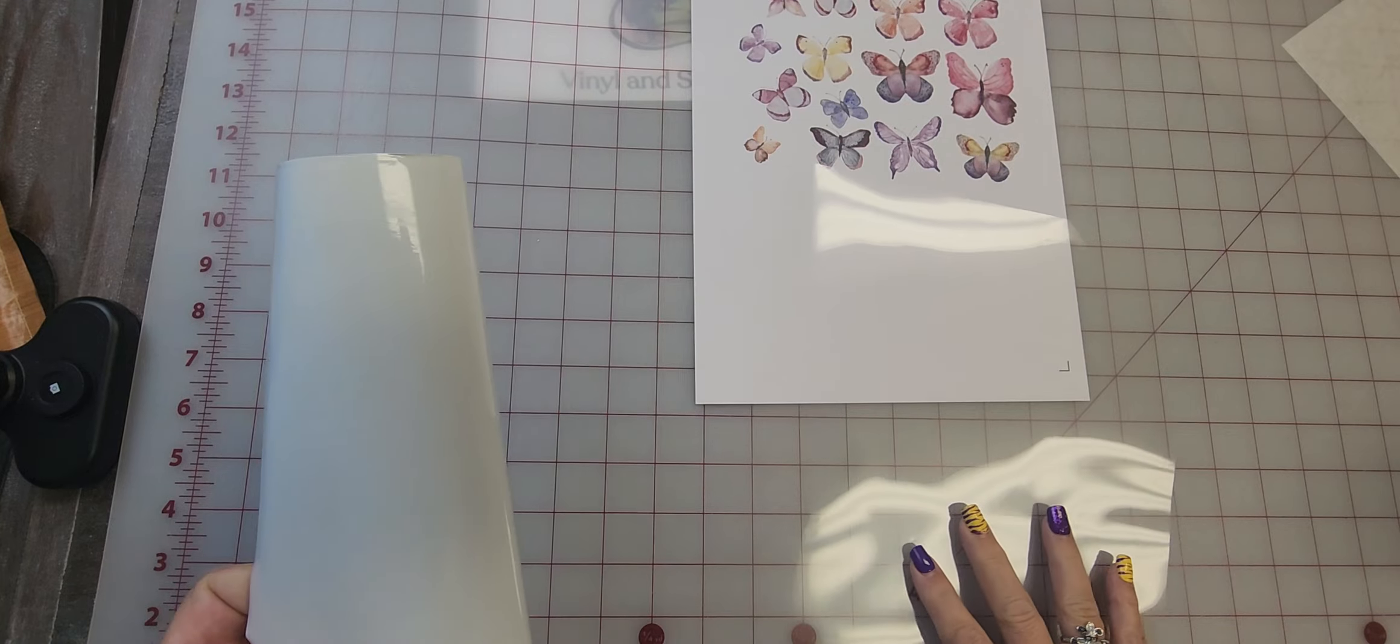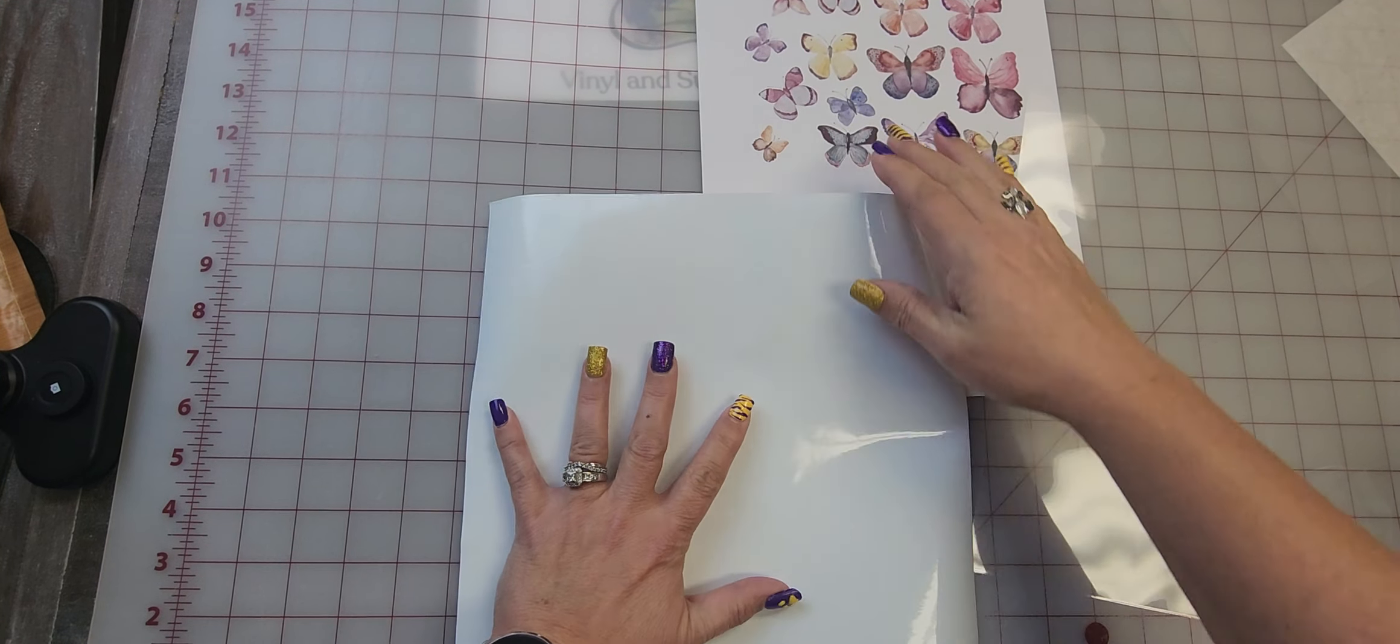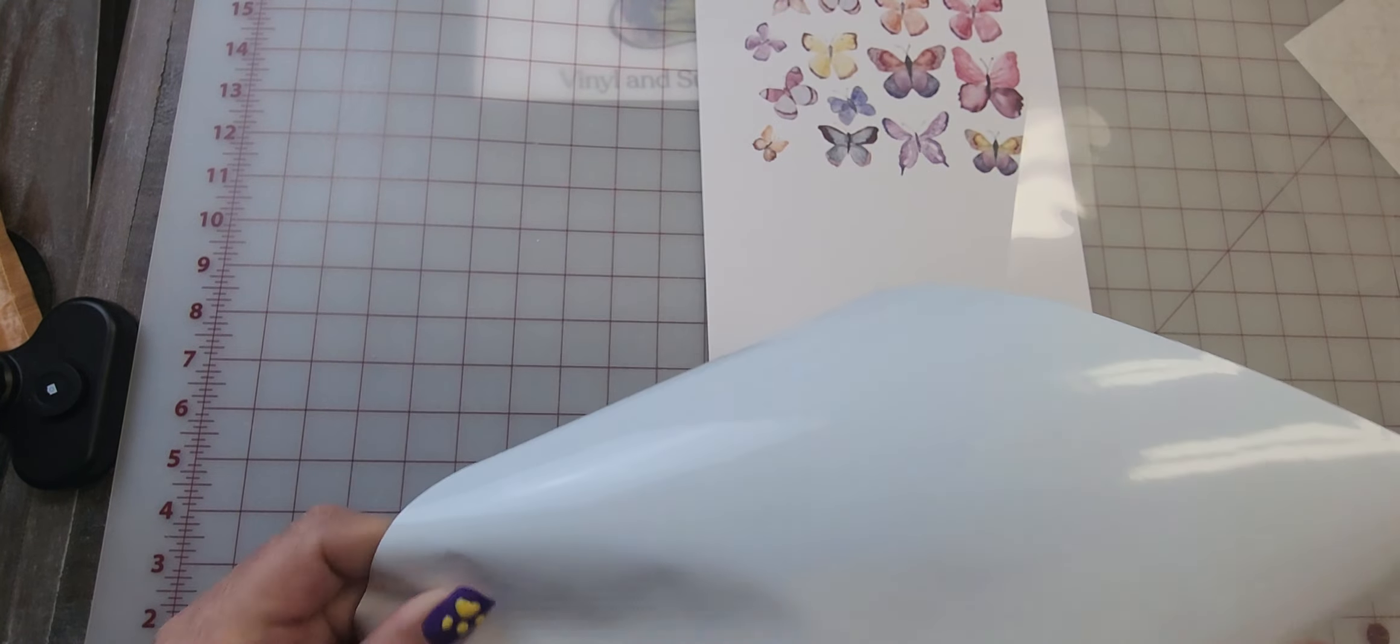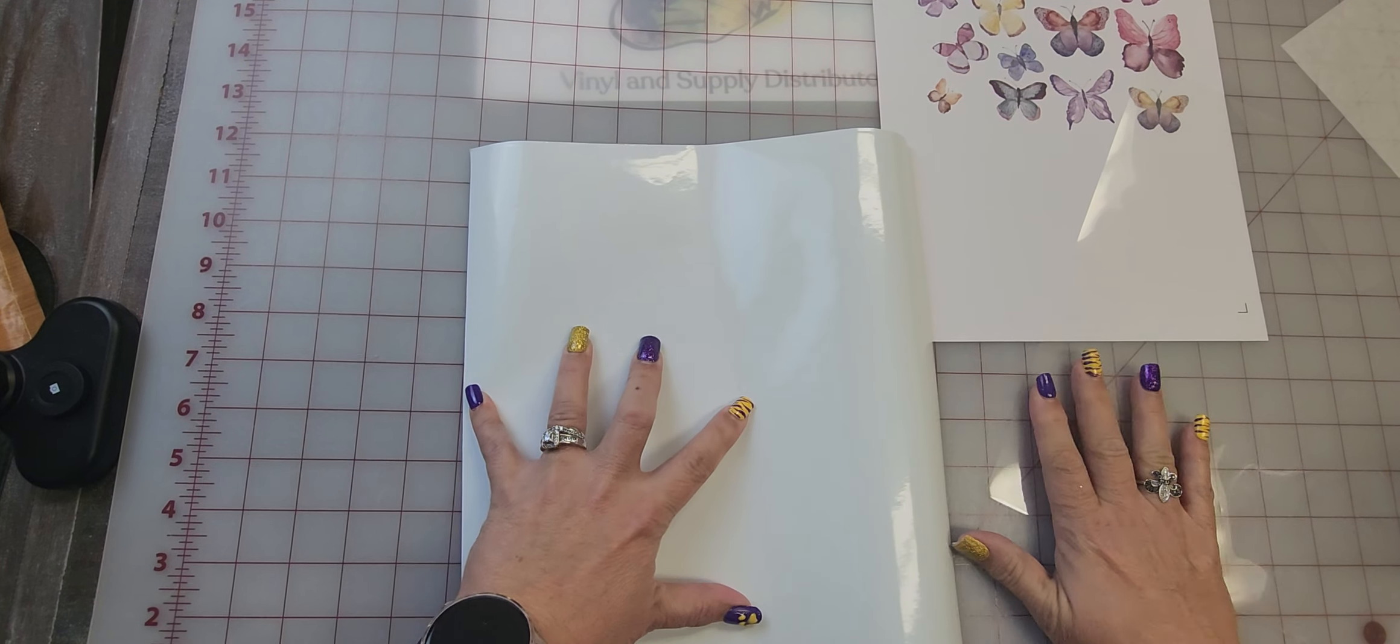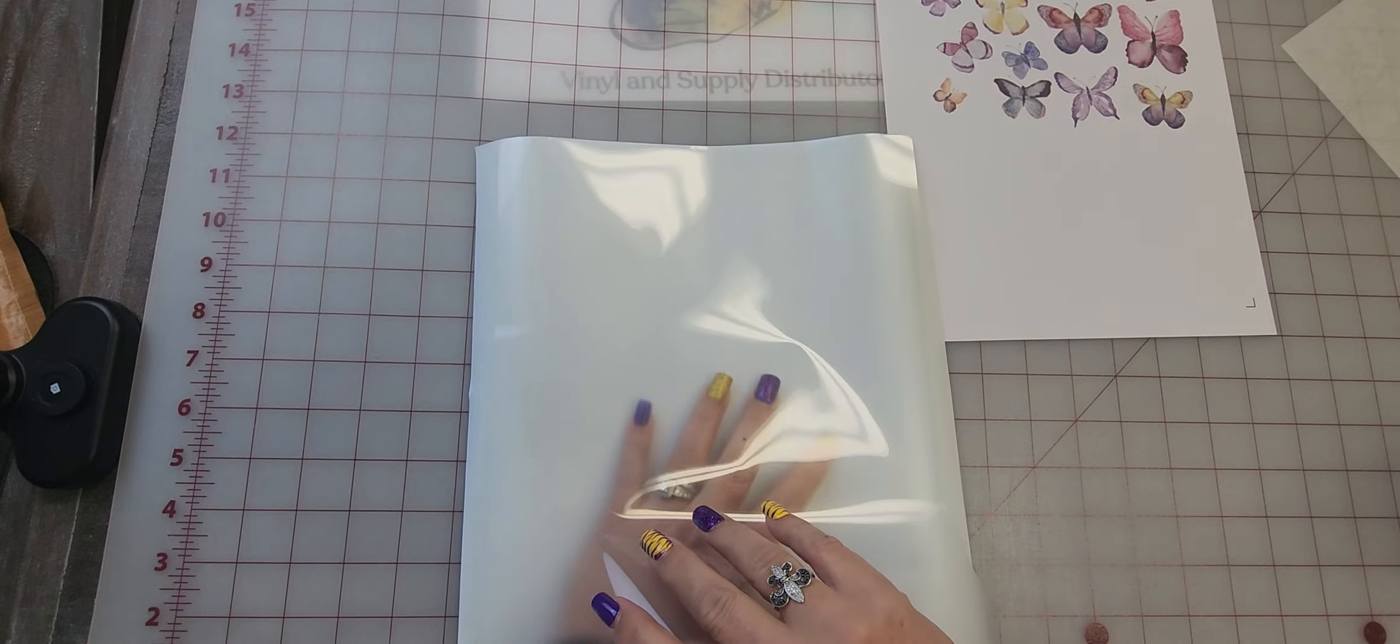All right, so now I have a piece of Oracal 651 and you can do this on any adhesive as long as you have this sheet. So I am going to place this on there.